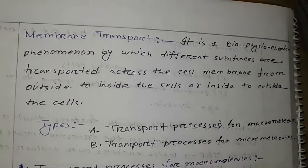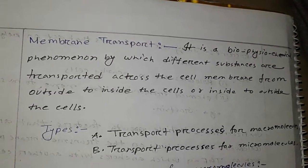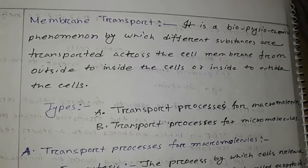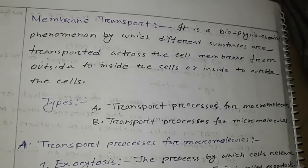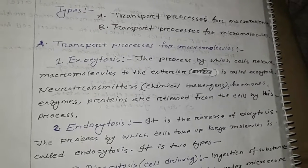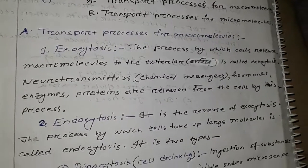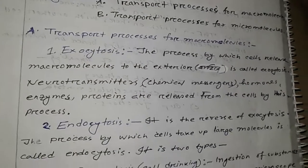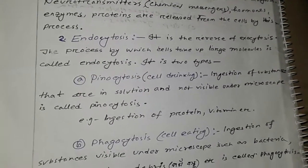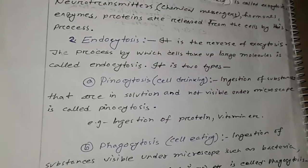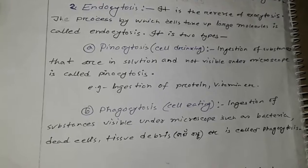Now, membrane transport. It is a biophysicochemical phenomenon by which different substances are transported across the cell membrane from outside to inside the cells or inside to outside the cells. Types: transport process of micromolecules and transport process of macromolecules. Transport of macromolecules: two types — exocytosis and endocytosis. Exocytosis: the process by which cells release macromolecules to the exterior is called exocytosis. Neurotransmitters, hormones, and enzymes and proteins are released from cells by this process. Endocytosis: the reverse of exocytosis — the process by which cells take up large molecules. Two types: pinocytosis (cell drinking) and phagocytosis (cell eating).